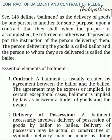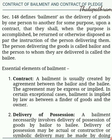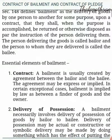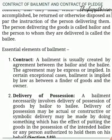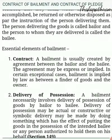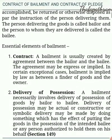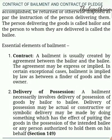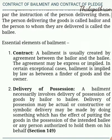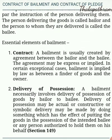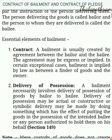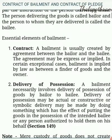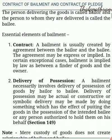Essential Elements of Bailment. First, Contract: A bailment is usually created by agreement between the bailor and the bailee. The agreement may be expressed or implied. In certain exceptional cases, bailment is implied by law, as between finder of goods and the owner.